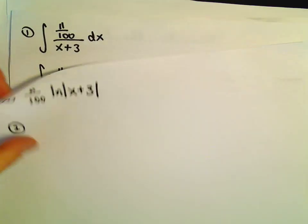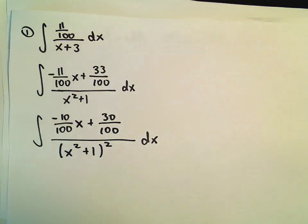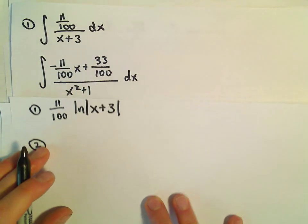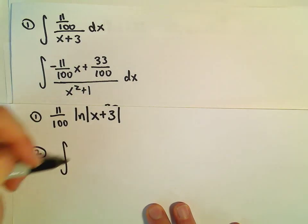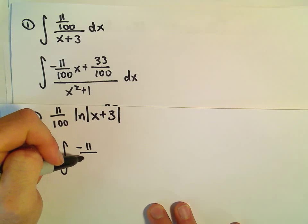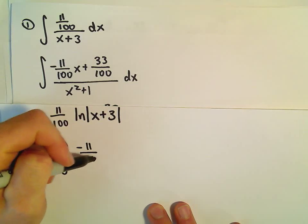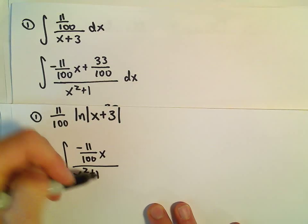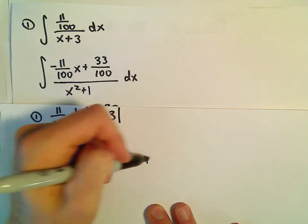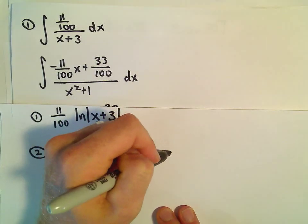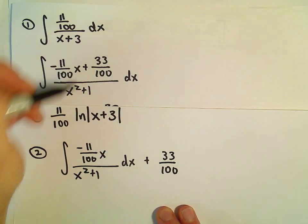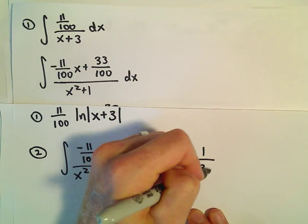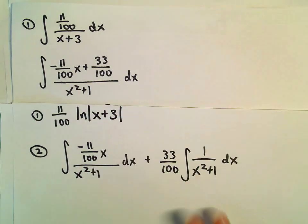For the second one, we have to break this integral up a little bit more. I'm going to split it into negative 11 over 100 times x over x squared plus 1, and then also integrate with 33 over 100 times 1 over x squared plus 1 dx.